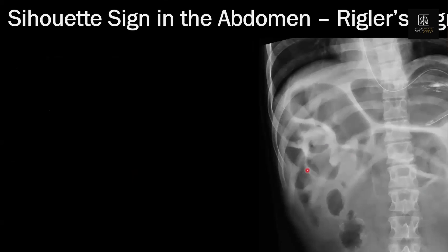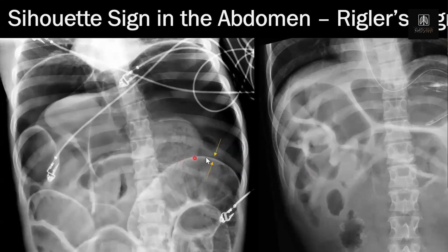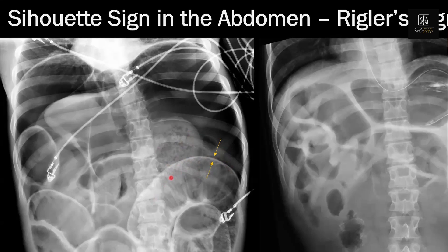That's the silhouette sign, and it's an important sign not just in chest radiology but all of radiology. The silhouette sign in the abdomen is Rigler's sign: if you can see the borders of the bowel wall, that's a sign of free air in the abdomen. Normally you don't see the bowel wall because air is on one side and the bowel wall is water density next to other water-density organs. But if there's free air in the abdomen, you have air on both sides of the bowel wall, which is why you can see that bowel loop.